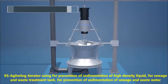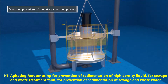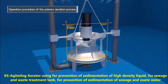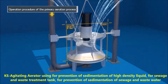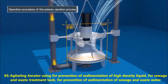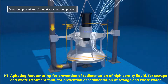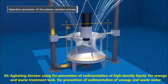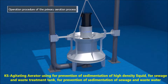Looking at its operation process, first it rotates the impeller simultaneously while supplying outside air into the water through the aeration pipe. As the impeller rotates, sewage is led downward through the intake.